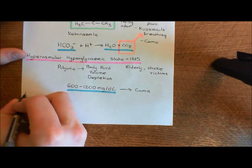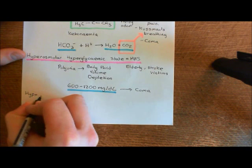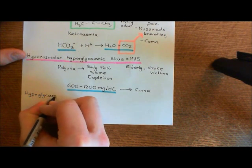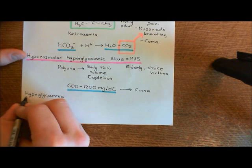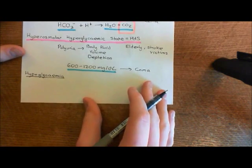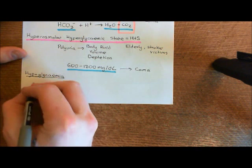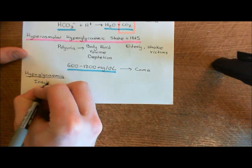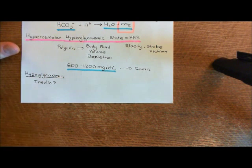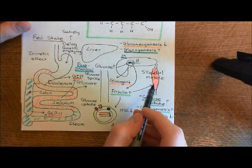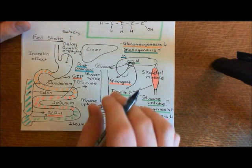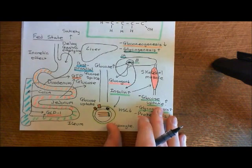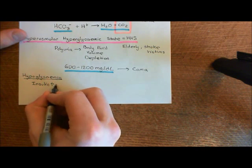Next up is hypoglycemia. This generally occurs in people who are being treated with insulin — type 1 diabetics are usually treated with insulin, but type 2 diabetics can also be treated with insulin. What causes hypoglycemia is injecting too large a dose of insulin. Insulin makes skeletal muscle, the liver, and the adipocytes remove glucose from the blood, so blood glucose will plummet if you give too much insulin, causing hypoglycemia.